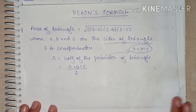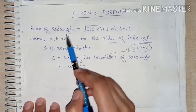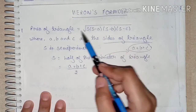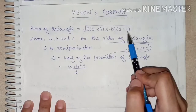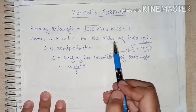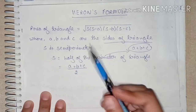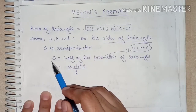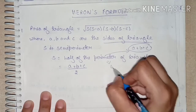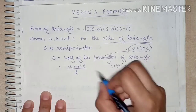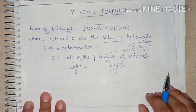Before that, let's revise Heron's Formula once. Area of triangle = √(s·(s−a)·(s−b)·(s−c)), where a, b, c are the sides of the triangle and s is the semi-perimeter. The formula for s is: s = (a + b + c) / 2, i.e., half of the perimeter, which is the sum of all three sides.